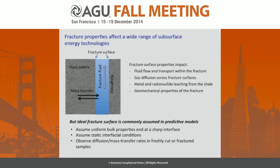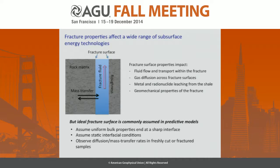And of course, while we're all here today to talk about what's going on in fractures and fractured shale in particular, these fracture surfaces are, I would argue, incredibly important to mass transfer reactions. The roughness affects flow. These processes have obvious implications. But typically in models, the fracture surface is treated as kind of a sharp ideal interface where they assume uniform bulk properties end at a sharp interface, and that these fracture surfaces are static. We've seen experimental results throughout the day that show that's quite not the case.